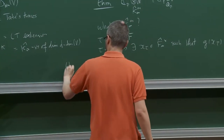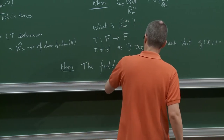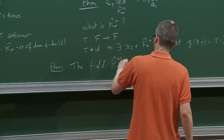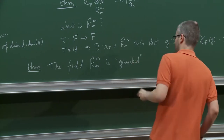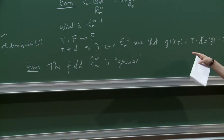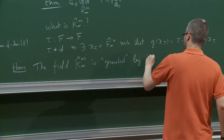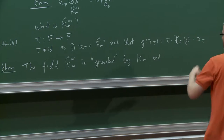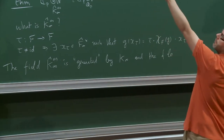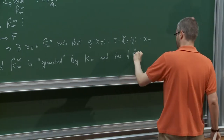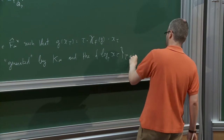If τ is the identity embedding, there is no such element. This really reflects the fact that χ_F has h Hodge-Tate weights, h−1 of them being equal to zero and one equal to one, which tells you there is no corresponding element when τ is the identity embedding. The theorem, whose formulation I apologize for, is that the field K_∞-hat^an is generated by K_∞ and those h−1 elements — the logs of x_τ for τ different from the identity.